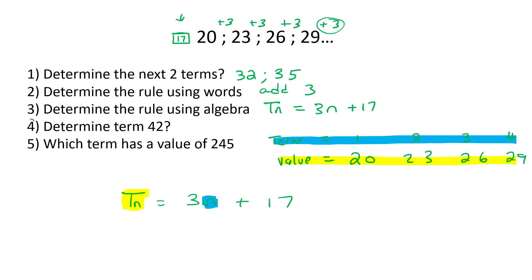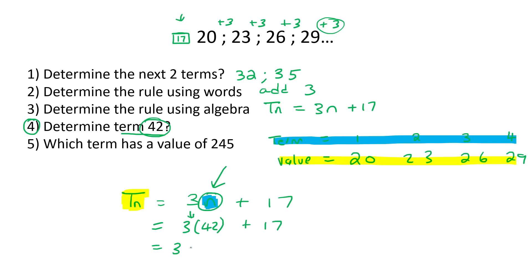Question four says: what is term 42? So they've given us the term — the blue one — and we go and fill in 42. That becomes a multiply: three multiplied by 42 plus 17. And that gives you 143.